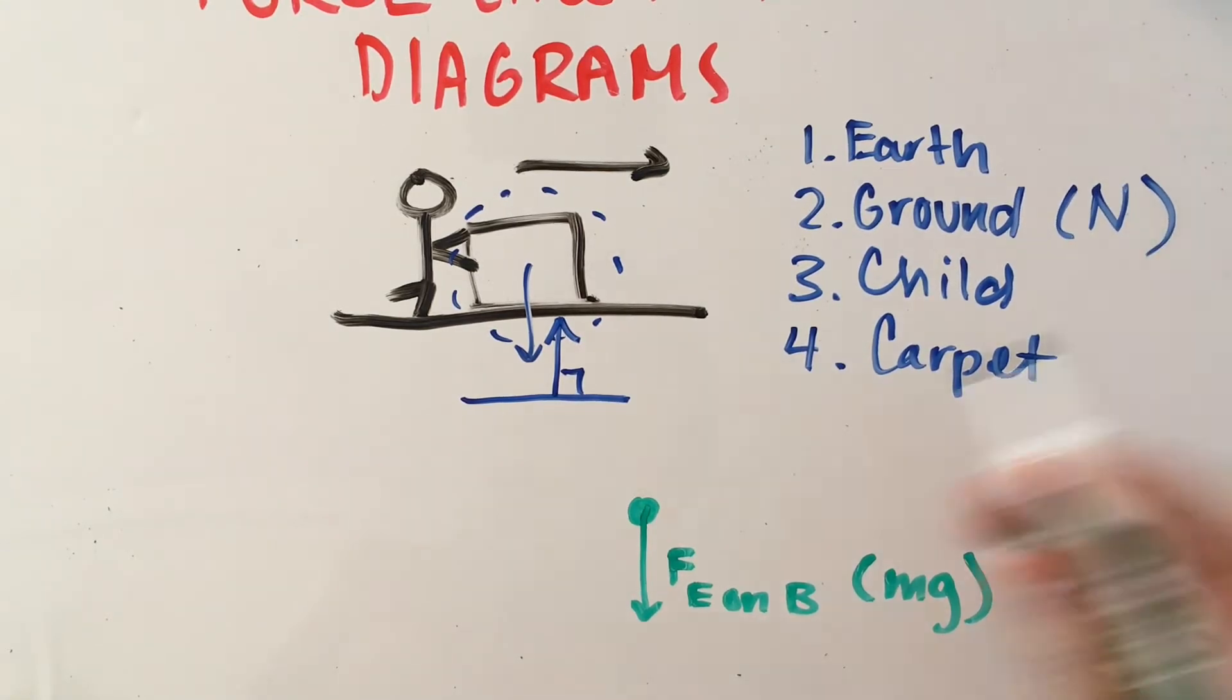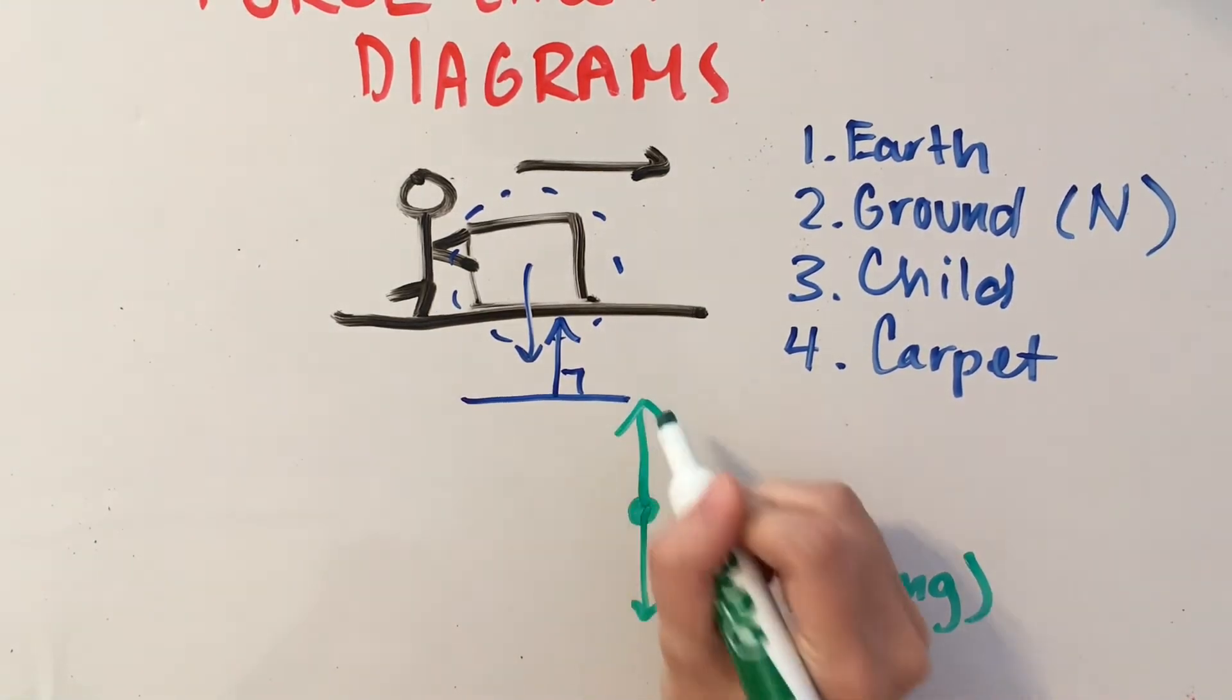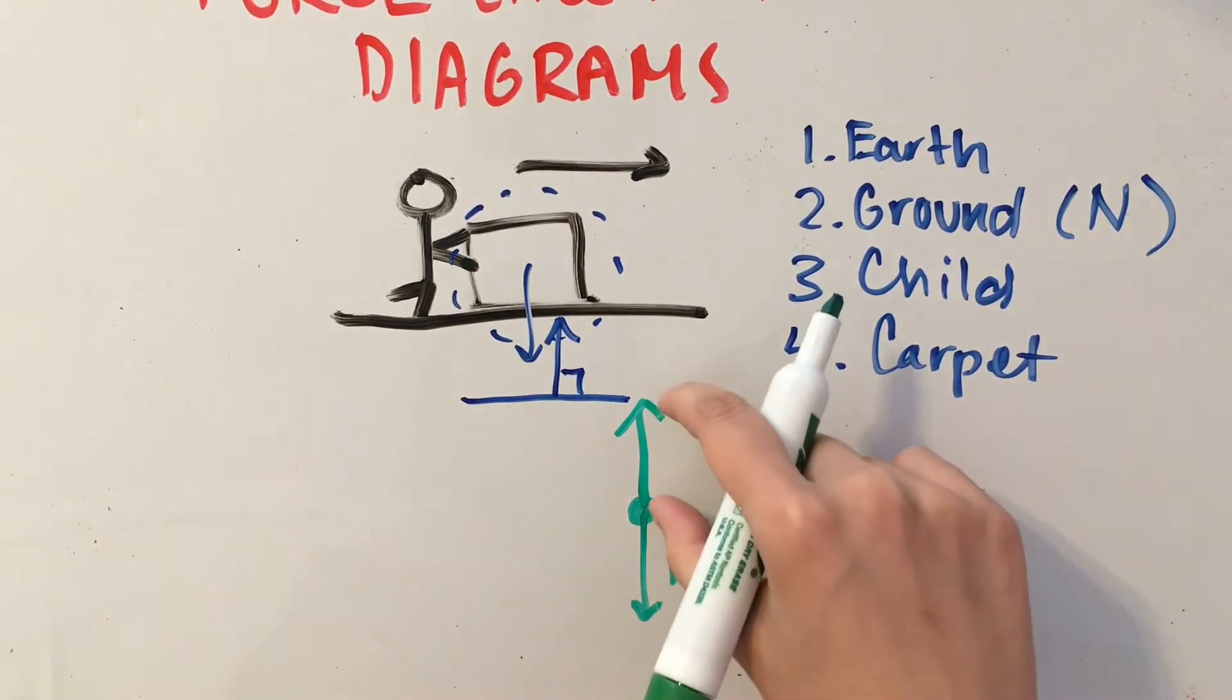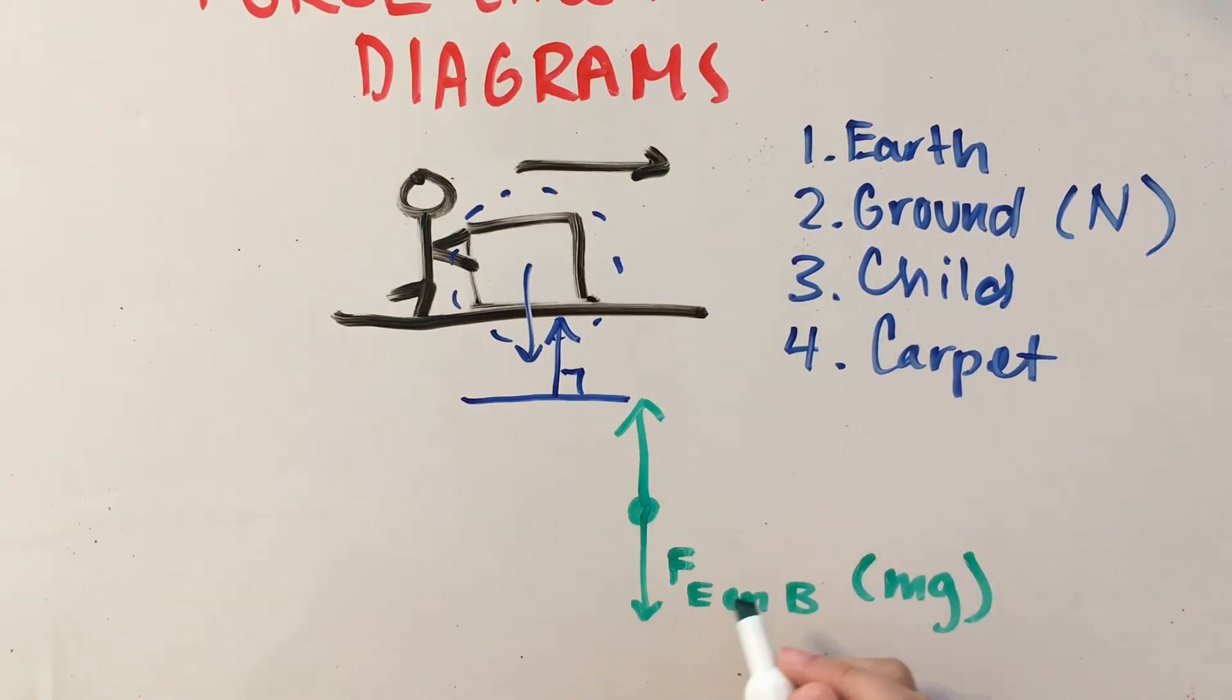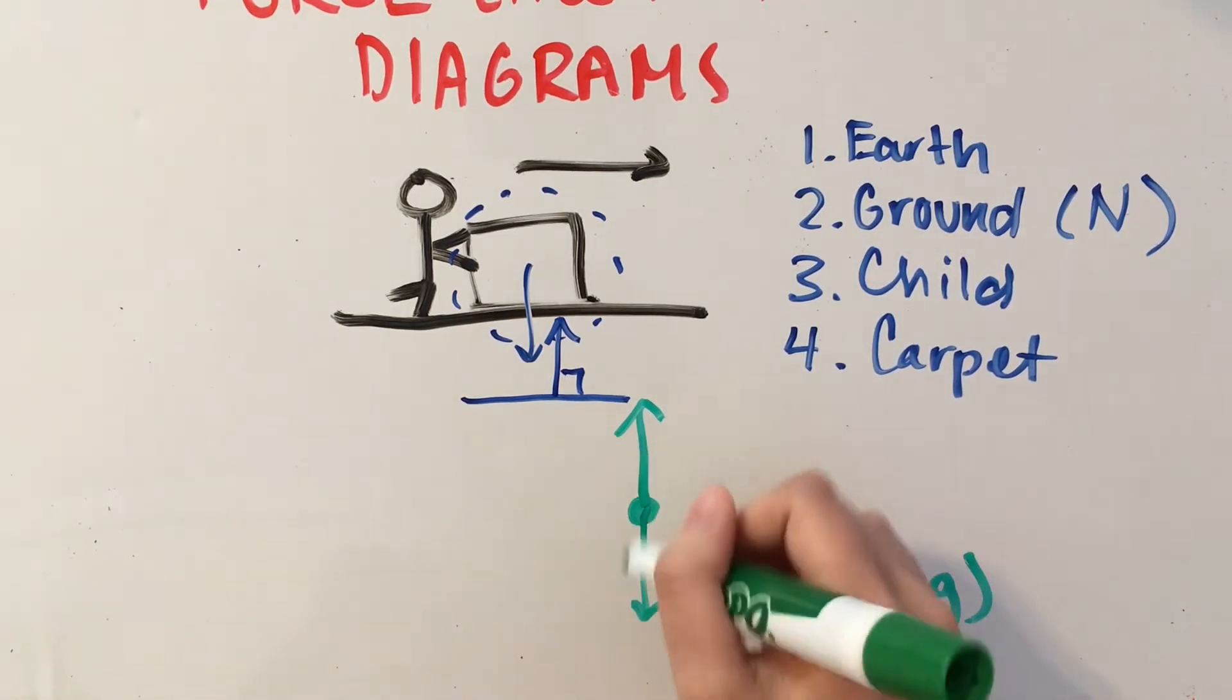We also have the ground, which is pushing upwards. And these two forces should be about the same length, or they should be the same length, because they will be counteracting each other and balancing each other out.